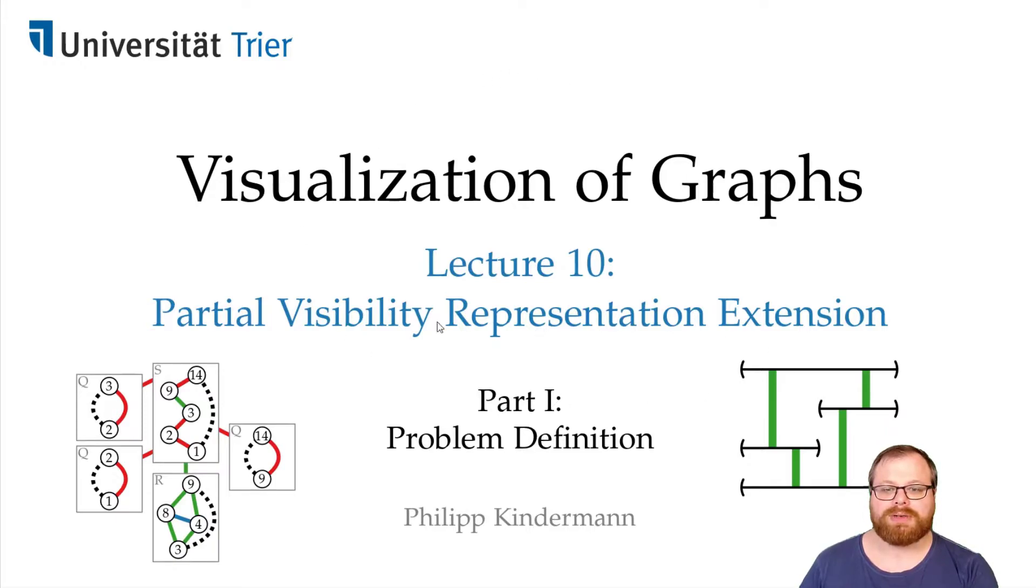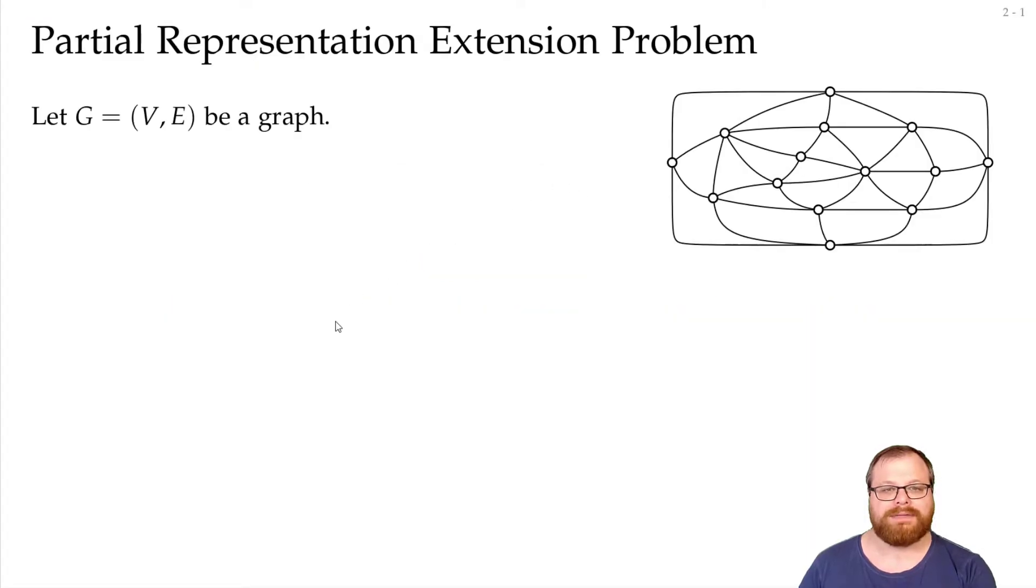Let's first talk about the representation extension part. Let's say we have some graph and we have a subset of the vertices. Then we get the induced subgraph H of the graph that is induced by these vertices, by the orange ones.